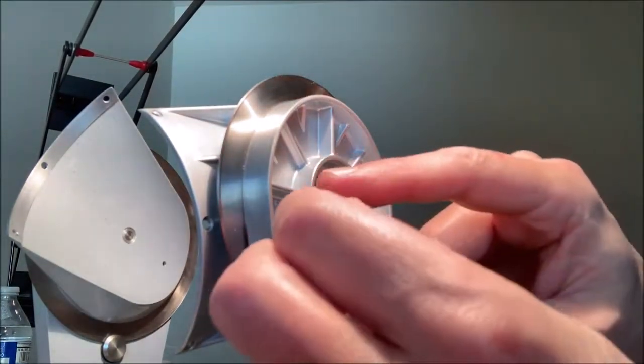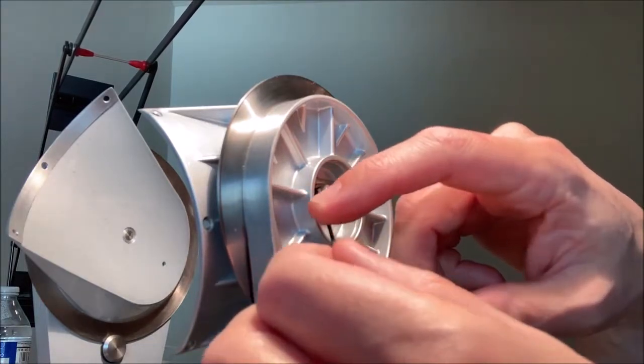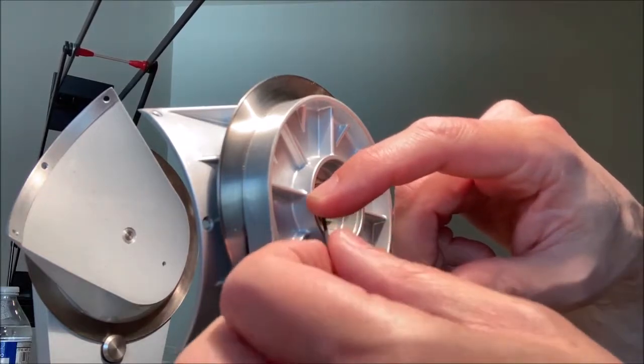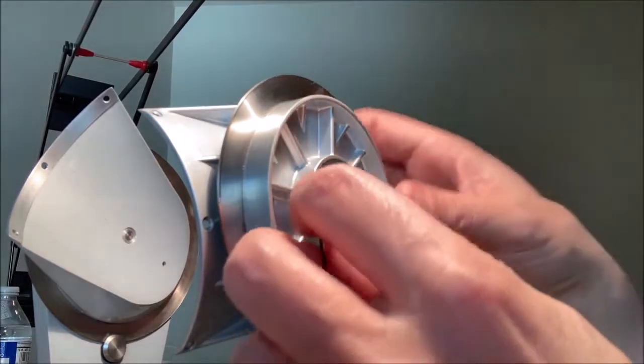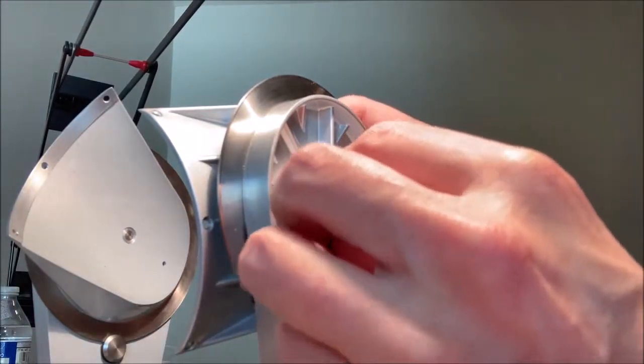You can usually find these things on eBay for a few dollars, and you can cut it down by, if you don't have all the proper machine tools, just give it a few good nicks with a file and snap it off in a vise and then file it or sand it down.